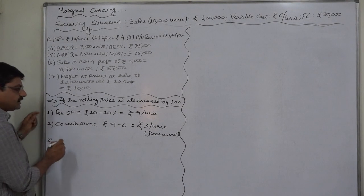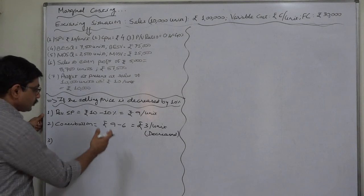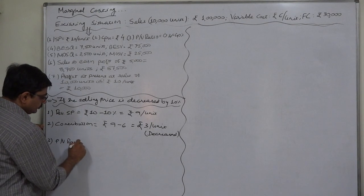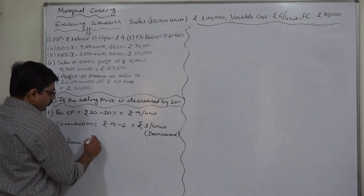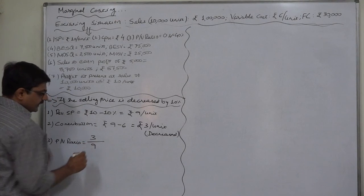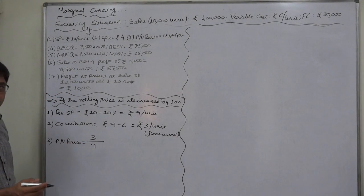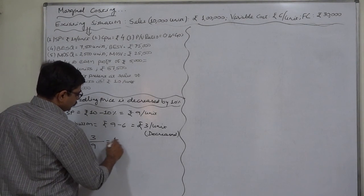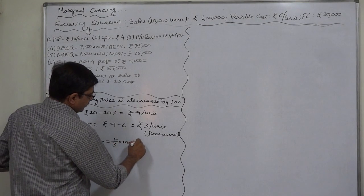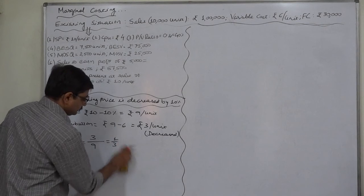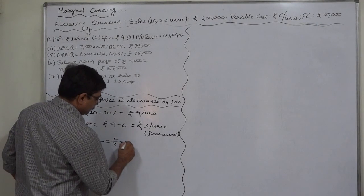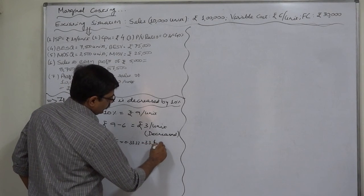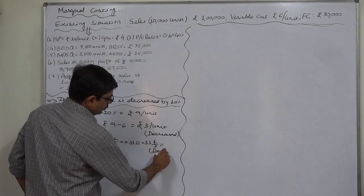The changed contribution will automatically change the PV ratio — profit volume ratio. That will now be contribution per unit 3 divided by selling price per unit 9. The formula is contribution upon sales revenue. It is now 3 and 9 respectively per unit, so it comes to one-third. Multiplied by 100, it comes to 33 and one-third percent — so it has also decreased.